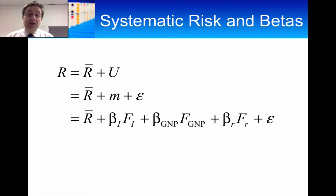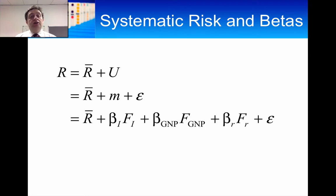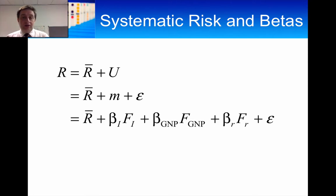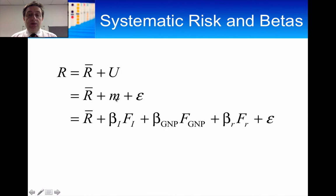Where the uncertainty lies is in the unexpected part, and we can break that up into two components. One is the systematic risk component — any unanticipated events that affect many securities. Then you have the unsystematic risk component, where new information affects only one individual company. That firm-specific part is what we call the epsilon (E) here.